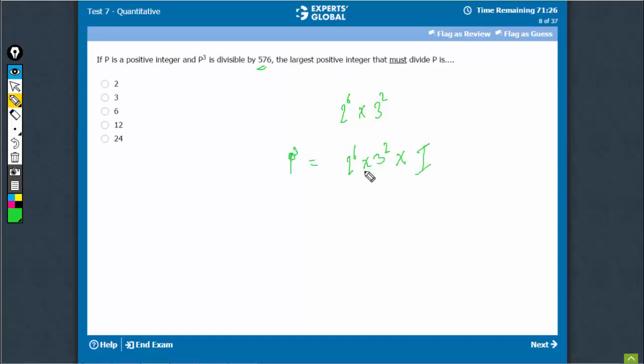P³ is divisible by this. Therefore, P must be divisible by cube root of this. So, 2 raised to power 2.